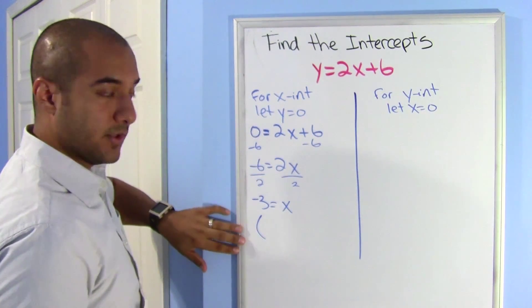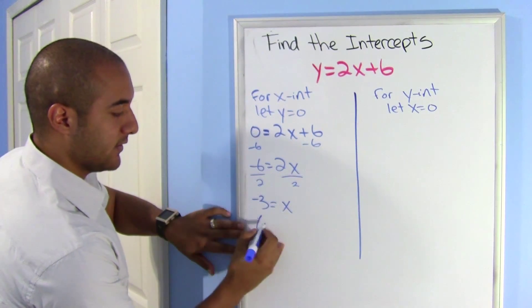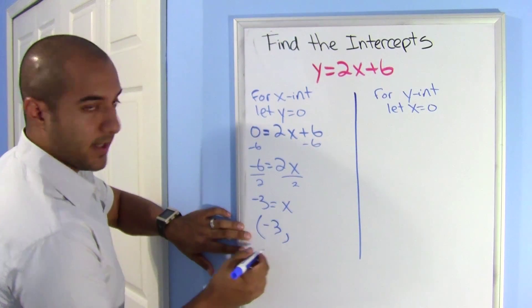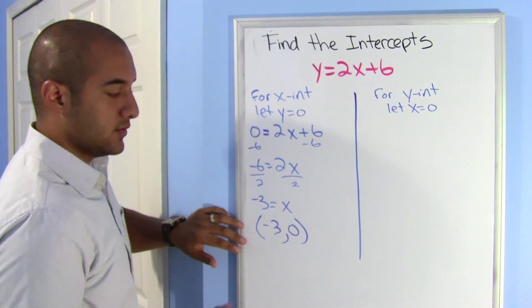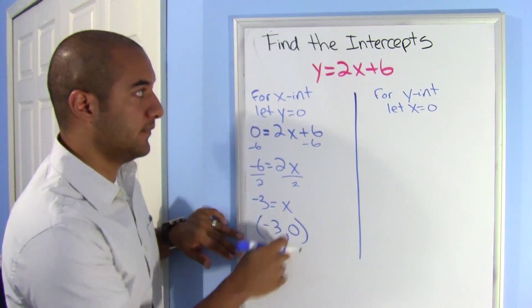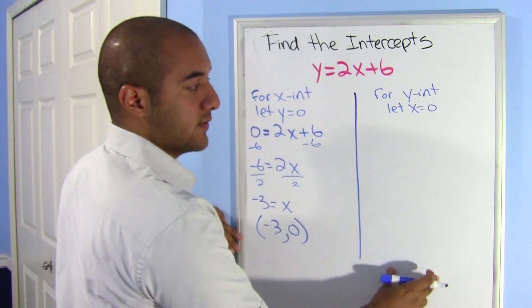So my coordinate for the x-intercept is this: my x is negative 3, my y, you already know your y, you let your y be 0. So that's one coordinate, that's where this graph is going to cross the x-axis. Let's find out where it crosses the y-axis.